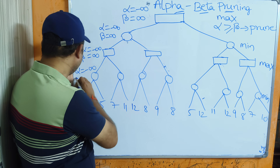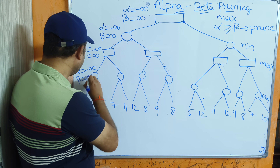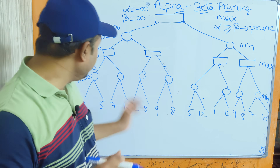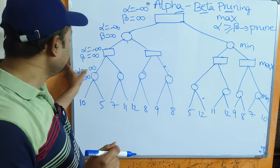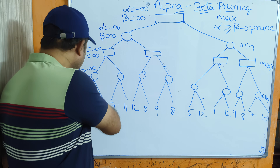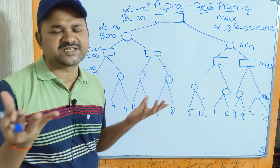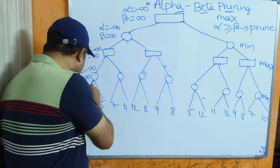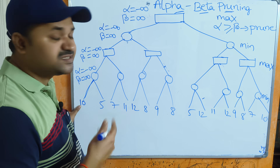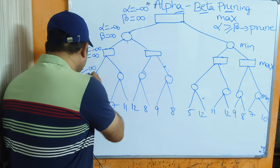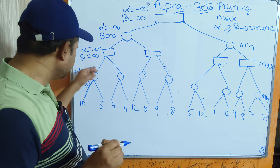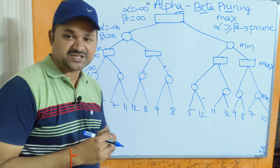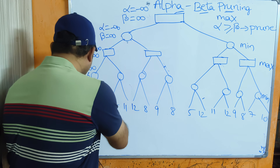These nodes are used by the min player. Min player uses only the beta value and does not touch alpha. Min player always tries to find the minimum value. At the leftmost terminal node, out of infinity and 10, the smallest value is 10, so replace beta with 10. Then traversing the right path, out of 10 and 5, the smallest value is 5, so replace beta with 5.